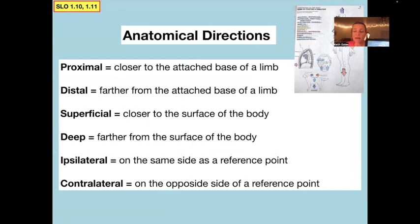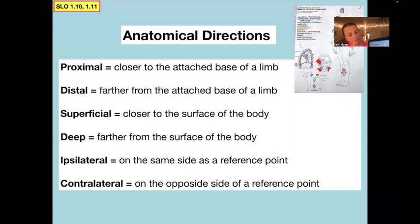Ipsilateral means on the same side as some reference point. In the picture, a guy is wearing an eye patch. If he had been in an explosion where his eye was hurt and some of his teeth were knocked out, you would say the damage was ipsilateral if it was on the same side. On the other hand, contralateral means on the opposite side of the reference point — so if he hurt his right eye and his left teeth were knocked out, the damage to his teeth was contralateral to the damage to his eye.